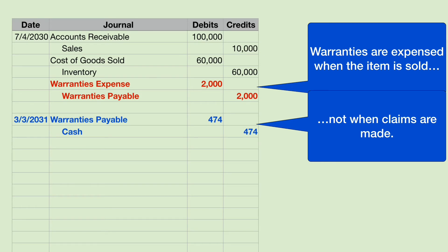The Ford manufacturer sells this truck first to a dealership, and then the dealership sells it to the retail customer. The first part of this journal entry is very standard — the most common transaction in the world is to sell inventory. But I'm going to add these two lines in red, because every truck comes with a two-year standard warranty. The Ford Motor Company has to recognize all expenses and match them to the revenue, and they have to go to the books at the same time.